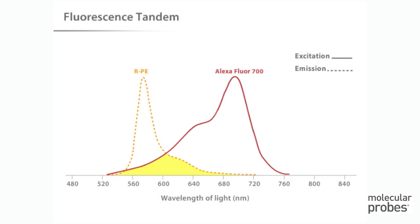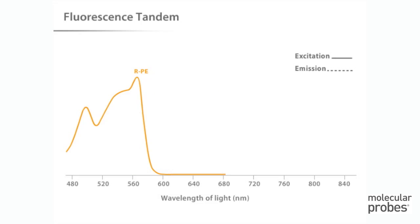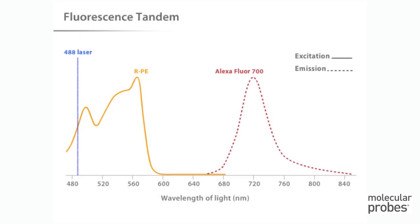We can get a better idea of why this works by looking at the excitation and emission plots from the two fluorophores involved — RPE and Alexa Fluor 700 dye. FRET is possible between these two fluorophores because the emission of RPE is in the excitation range for Alexa Fluor 700 dye. Scientists can take advantage of this shift in fluorescence emission to excite the tandem dye with 488 nanometer light and collect much longer wavelength emission at 723 nanometers.